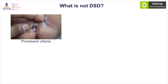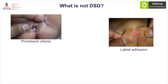A prominent clitoris in premature infants should not trigger unnecessary DSD investigation. Clitoral growth is completed by around 28 to 30 weeks of life, but fat content is not increased. Just as increased suprapubic fat in obese males causes apparent micropenis, the opposite occurs in preterm infants — the clitoris looks large due to lack of fat. However, if clitoral size exceeds 10 mm, concern is warranted. Labial adhesion without clitoromegaly and penile hypospadias should not result in DSD evaluation.